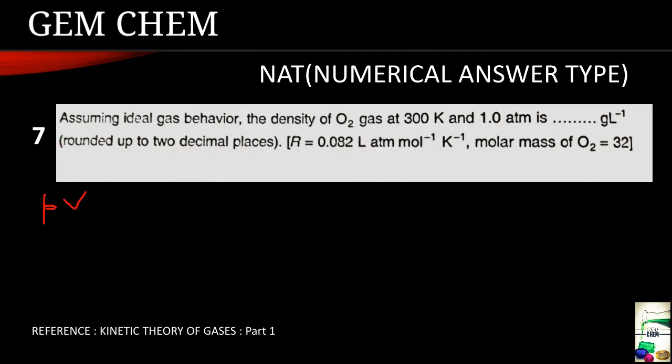Now it is very simple. PV is equals to nRT, and n can be written as being number of moles, M by big M, that is mass given by molar mass, into RT.